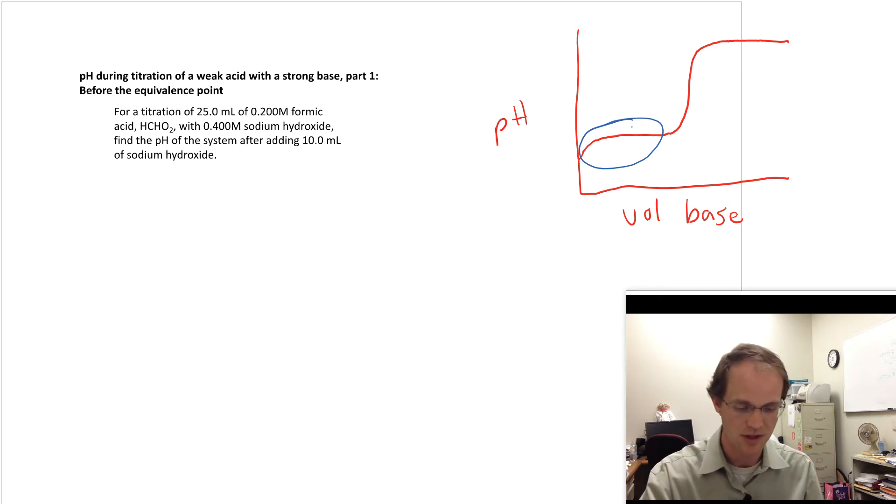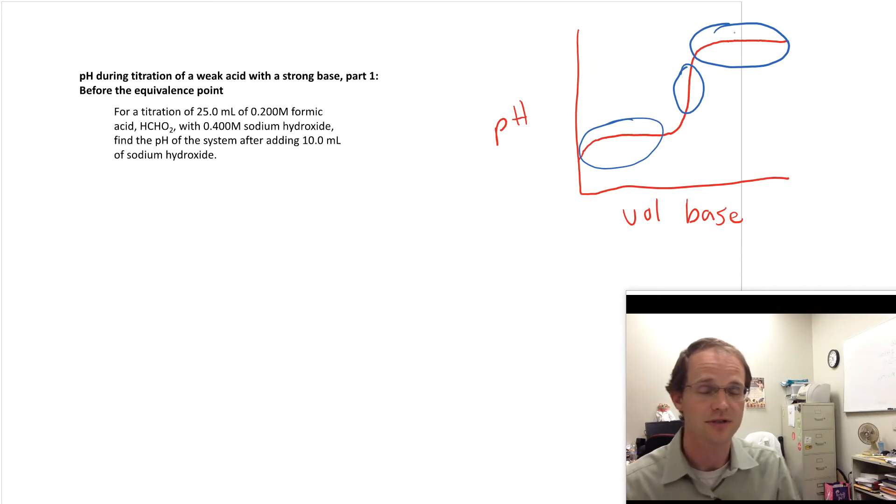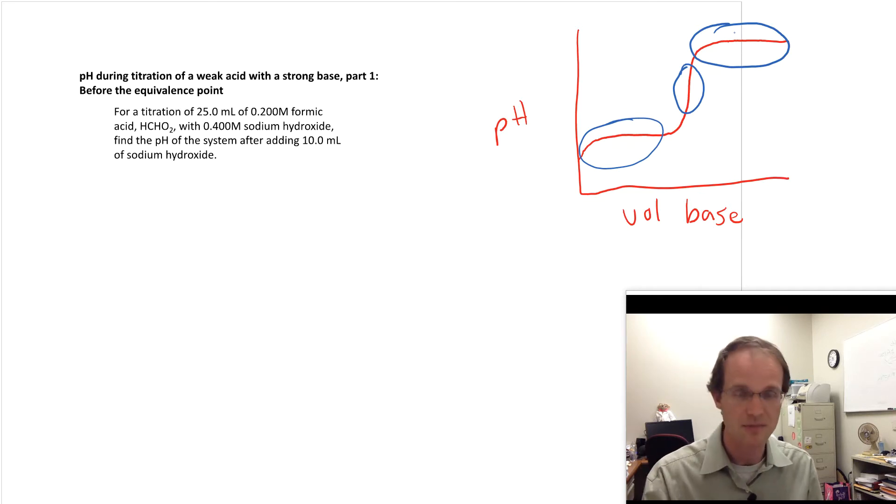There's a region over here, which is at the equivalence point. It's actually a point, not a region. And then there's a region over here, which is called after the equivalence point. Now since all those regions are named after the equivalence point, one of the things I like to do when I'm doing titration problems is I first like to find the equivalence point, because that tells me what kind of problem I'm going to be solving.